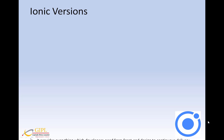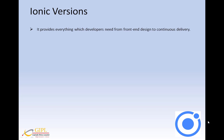Let's focus on Ionic versions. It provides everything developers need from front-end design to continuous delivery. Ionic 1 was introduced to create mobile apps with Angular 1 and was released at the end of 2013. Initially, it did not use web components. It uses Angular 1 directives to essentially give you a custom Angular component which only runs inside the Angular app.